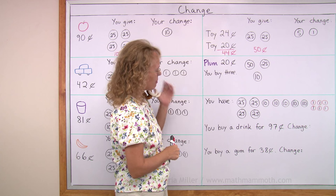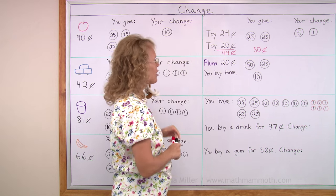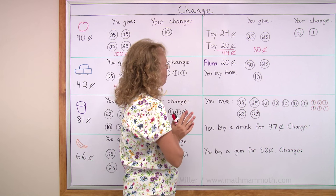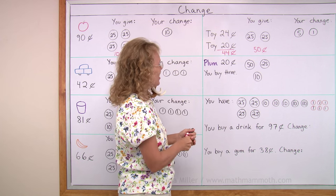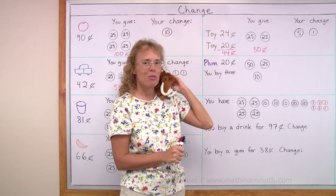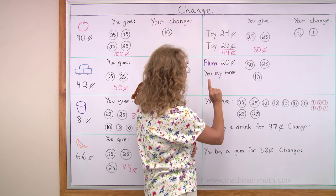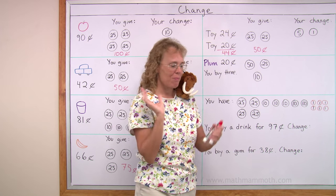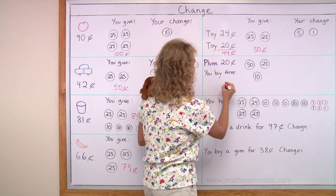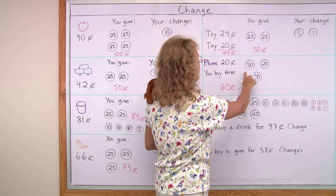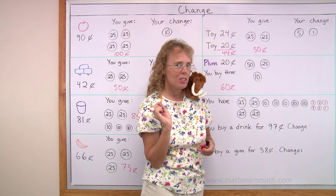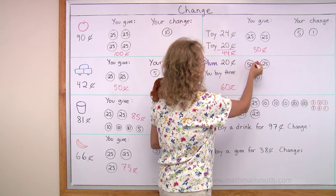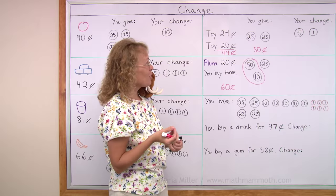A plum costs 20 cents. Mathie is asking why not blueberries — he wants to eat blueberries. Well, plums are just so much bigger and yummier. Plum, 20 cents. You buy three. So what is your total cost? Three plums at 20 cents each: 20 plus 20 plus 20 is 60 cents. And then how much are you giving? 50, 10, and 25 — so you basically give this and this. You have the exact amount, so you will get no change.